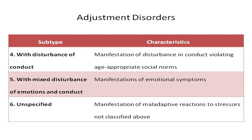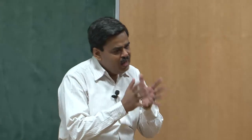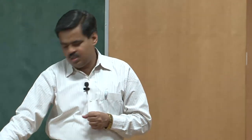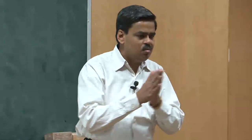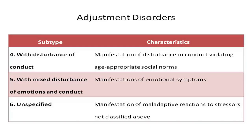The last subtype is the unspecified category. Here you see manifestation of maladaptive reactions to stress that are not classified in the five subtypes already discussed. Such reactions include physical complaints, social withdrawal, or academic inhibitions. If this person has some adjustment disorder but cannot be classified into the first five subtypes, yet shows physical symptoms, social withdrawal, or academic inhibitions, they belong to the sixth subtype of adjustment disorder.